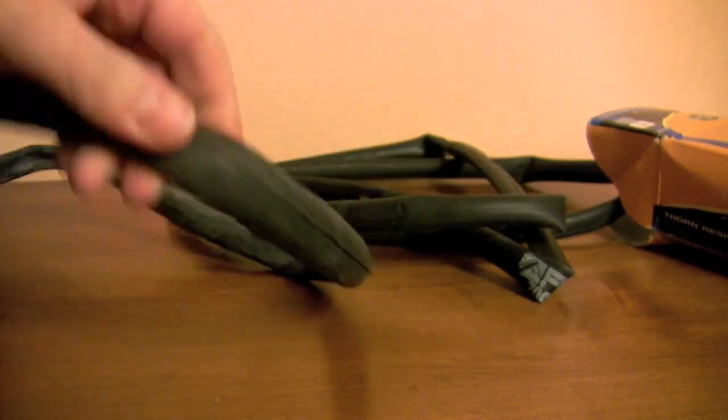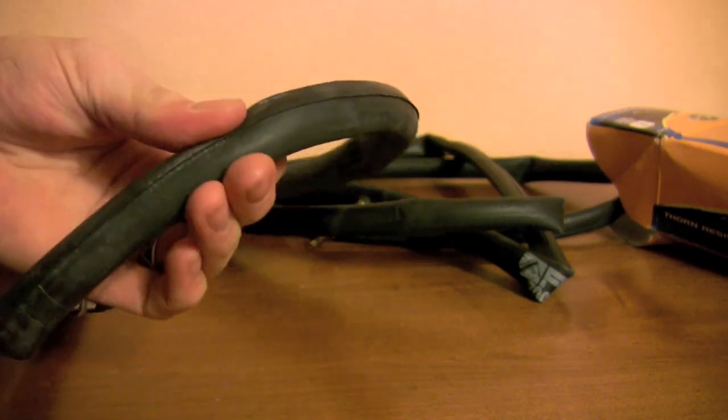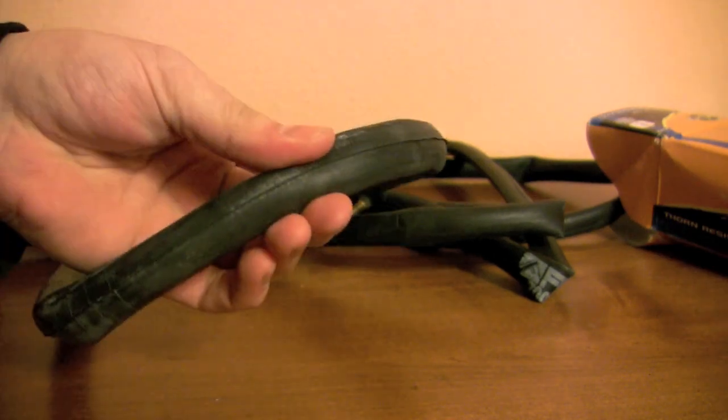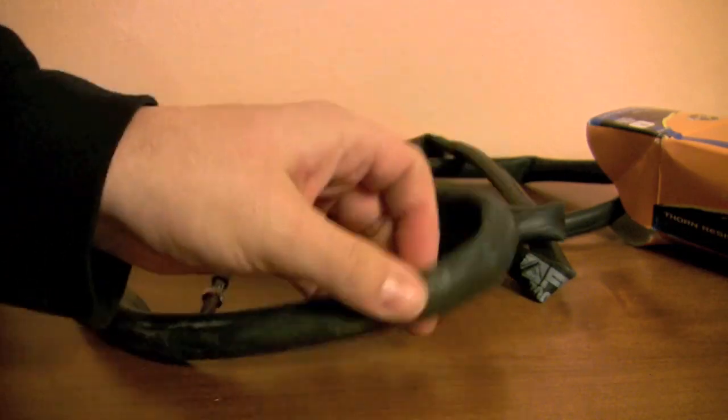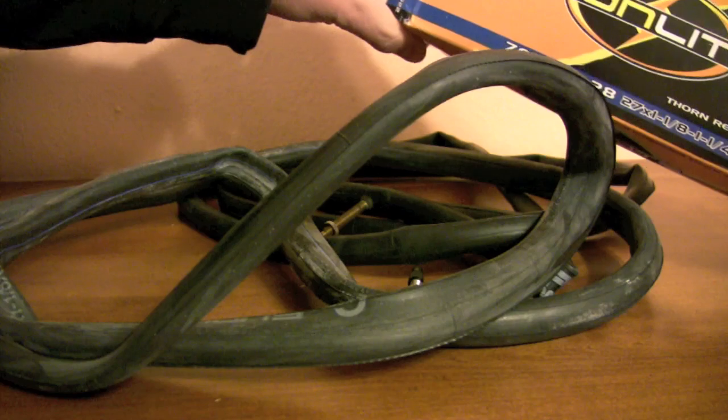So you pair this with a thorn resistant tire and you've got pretty good coverage for making sure you're not going to get a lot of flats. That's Sunlight.